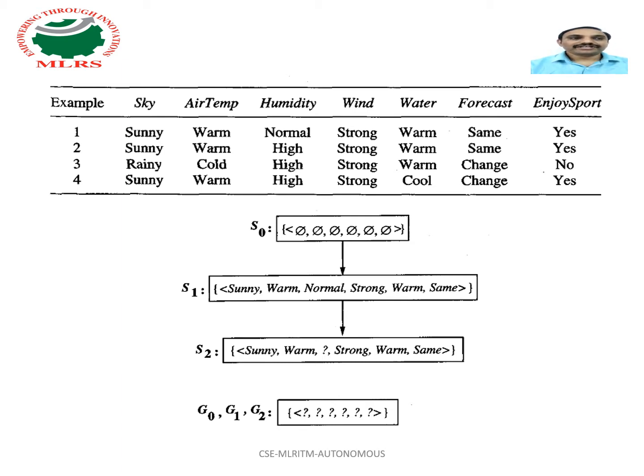When the first training example is considered, that one is a positive example. The Candidate algorithm checks the S boundary and finds it overly specific, as it fails to cover the positive example.